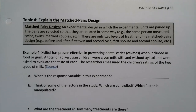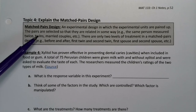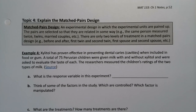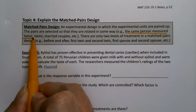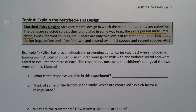A second type of design we have is the matched pairs design. This is an experimental design in which the experimental units are paired up. The pairs are selected so that they are related in some way. One of the ways that this happens most frequently is actually the same person measured twice — so you're matching up with yourself, creating a pair of results from your own self. Other examples include twins, married couples, and so on.